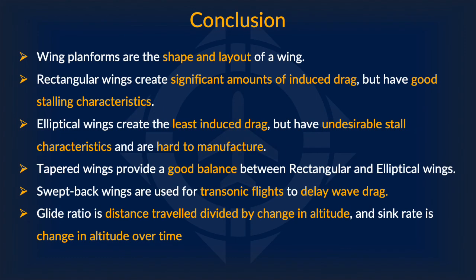Here's a recap of what we learned today. Wing planforms are the shape and layout of a wing. Rectangular wings create significant amounts of induced drag but have good stalling characteristics. Elliptical wings create the least induced drag but have undesirable stall characteristics and are hard to manufacture. Tapered wings provide a good balance between rectangular and elliptical wings. Swept back wings are used for transonic flights to delay wave drag. Glide ratio is the ratio between horizontal distance traveled and change in altitude, while sink rate is your change in altitude over time.